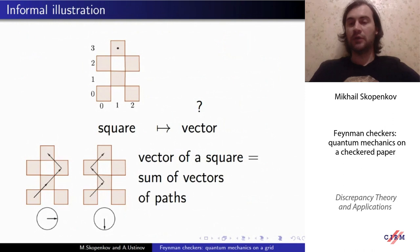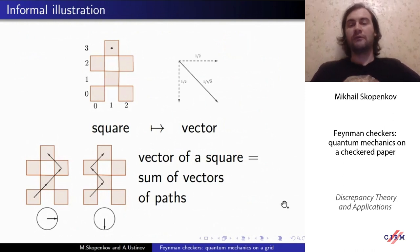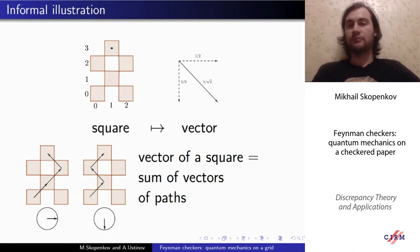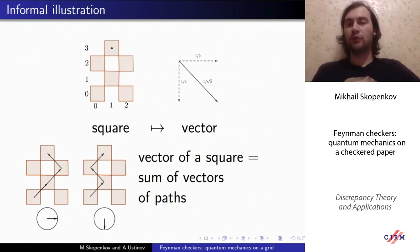Now we take the sum of all the vectors assigned to those paths and put the sum into the square. This is the vector assigned to the square — just sum over all paths. For this particular situation, we take the sum of the two paths computed before. As a result, we get a vector looking downwards-right of length one over square root of two. This is just the diagonal of the square with sides being the vectors computed in the previous slide.